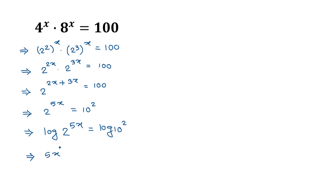So the left side becomes 5x times log 2, and the right side becomes 2 times log 10. Since log of 10 equals 1, the right side simplifies to 2 times 1, which is 2.